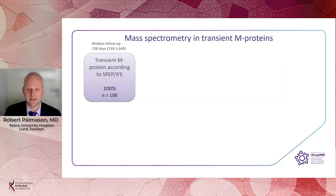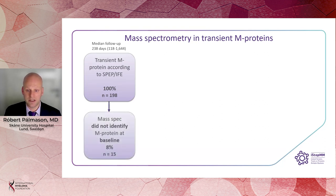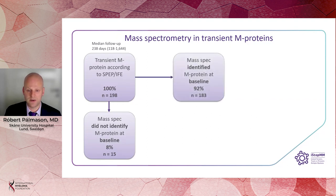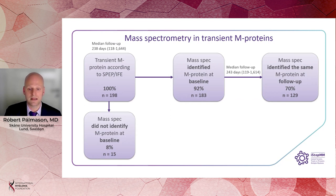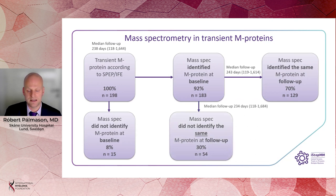Looking at the mass spectrometry results, we again have 198 individuals in the transient M protein group with a median follow-up between testing of 238 days. In 8% of cases, the mass spectrometry was completely negative at baseline, but in 92% of cases we identified an M protein. At follow-up testing with a median of 243 days, mass spectrometry identified the same M protein in 70% of cases — so they were not transient at all, at least not according to mass spectrometry. In 30% of cases, with a median follow-up of 234 days, we did not observe the same M protein at follow-up. These individuals were judged to have truly transient M proteins according to mass spectrometry.